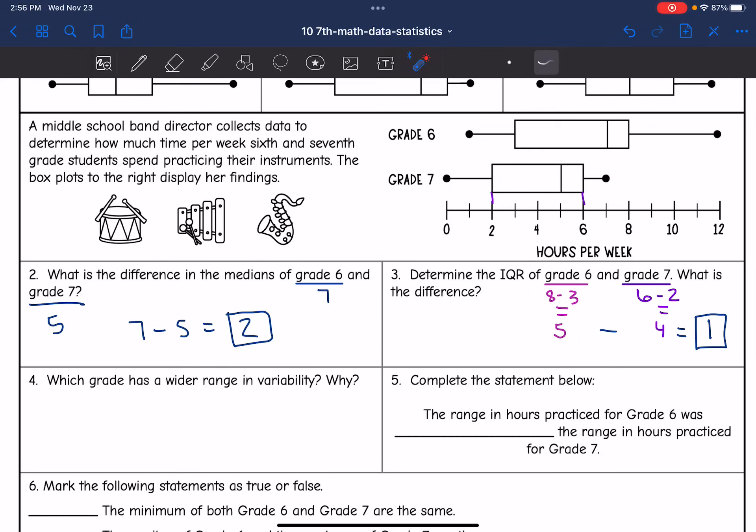You could also find the range of grade six and the range of grade seven to see that numerically. So let's do that. So the range for grade six would be the maximum of 12 minus the minimum of one, which is 11.